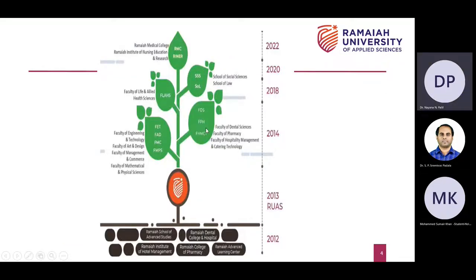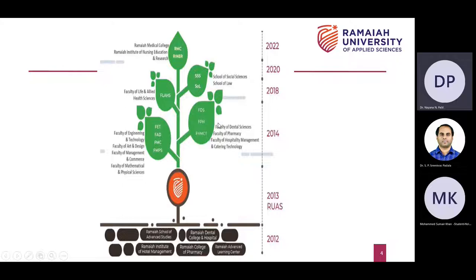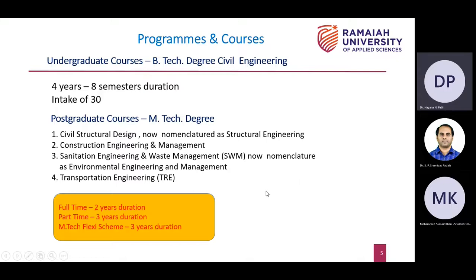This is a pictorial representation of the establishment of ROAS. Till 2012, we had different institutes like Ramayana School of Advanced Studies and others. All of them were merged and in 2013, ROAS was established. These are the various faculties and branches of ROAS. Coming to what civil engineering at ROAS offers in terms of its programs and courses.